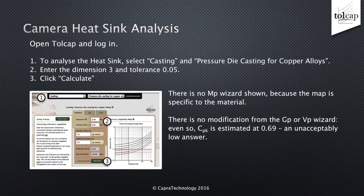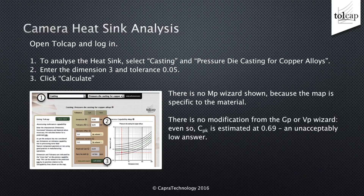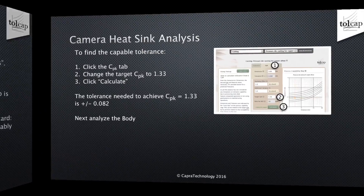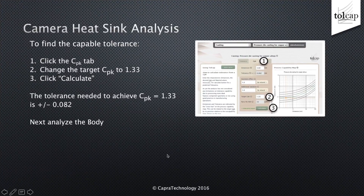Open Tolcap and log in. To analyze the heatsink, select Casting and Pressure Die Casting for copper alloys. Enter the dimension 3 and the tolerance plus or minus 0.05 and click Calculate. There is no MP wizard shown because the map is specific to the material. There's no modification from the GP or VP wizard. Even so, CPK is estimated at 0.69 — an unacceptably low answer. To find the capable tolerance, click on the CPK tab, change the target CPK to 1.33 and click Calculate. The tolerance needed to achieve CPK equals 1.33 is plus or minus 0.082.